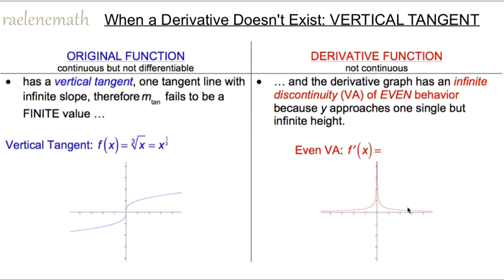When we work out the derivative of the cube root of x — without doing the algebra yet — we can see that the derivative graph is going to look like this and it has a vertical asymptote. More about these parent functions later.